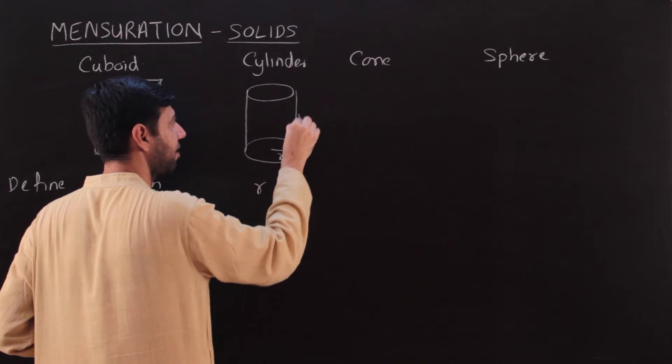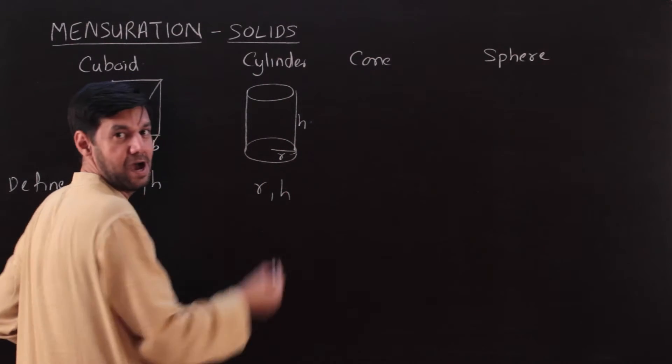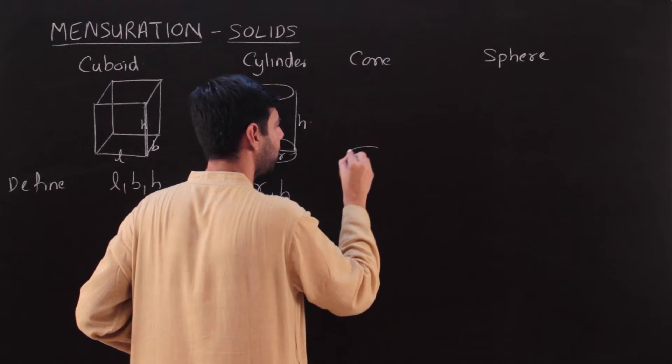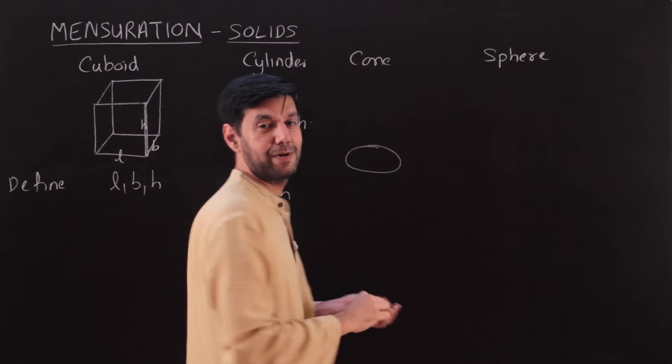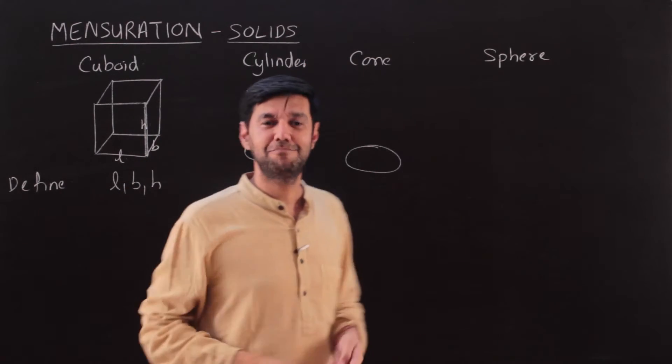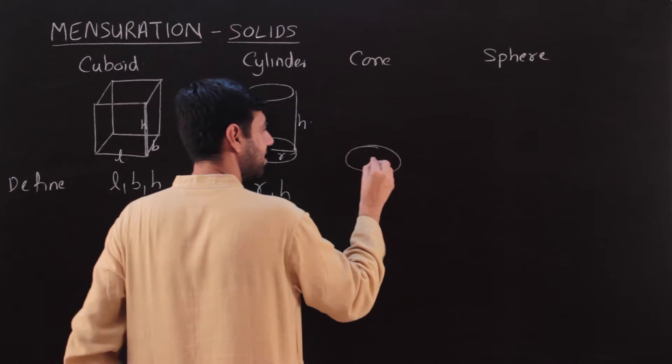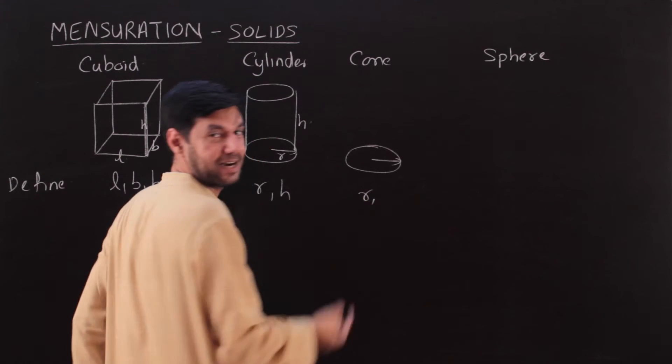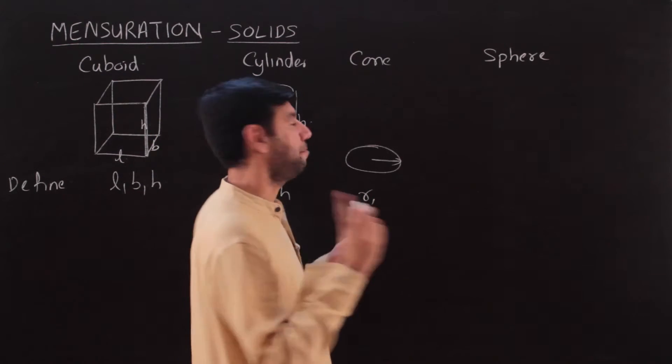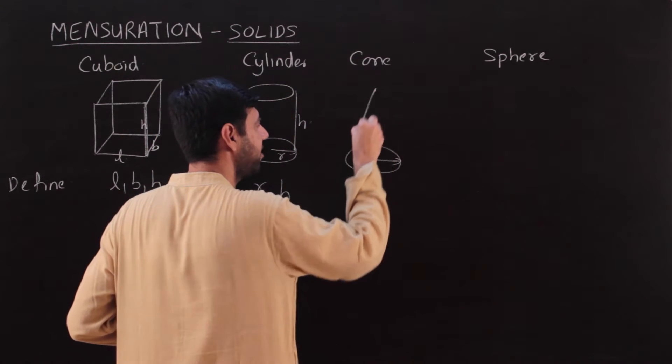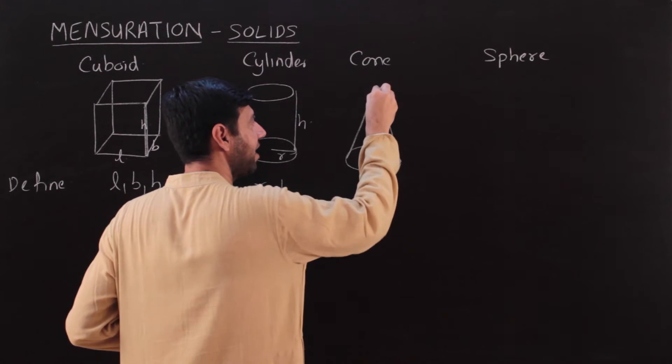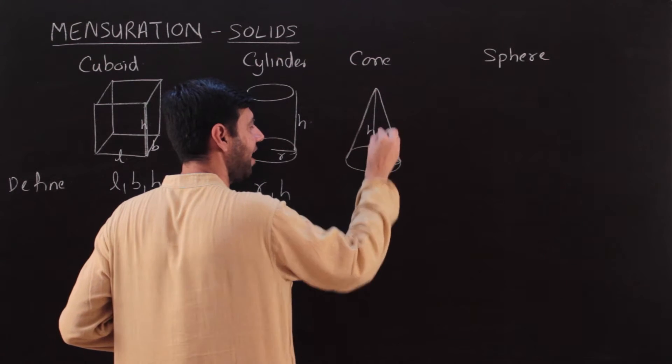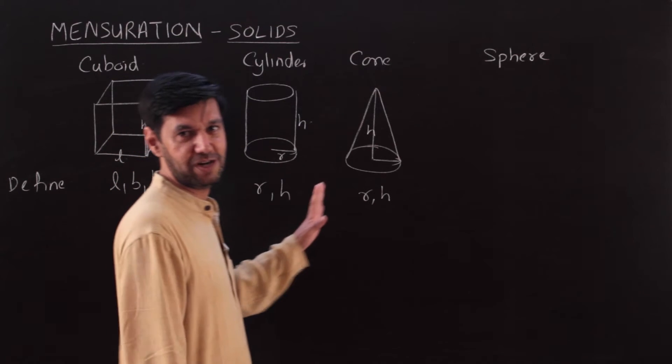A cone, you would have seen a cone in clowns or birthday parties. You wear a conical cap. That is a circle, so I need the radius. It is called radius of the base circle. The top is a point, and how high is it? I need to define that, so h is also what I need to define the cone completely.